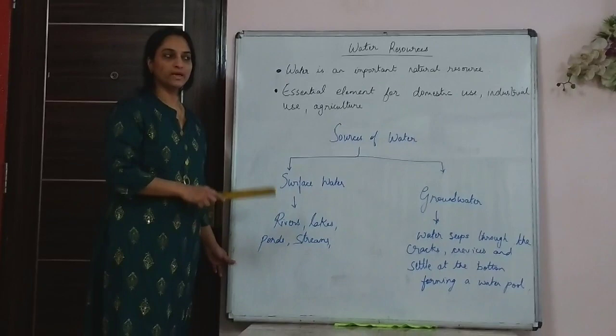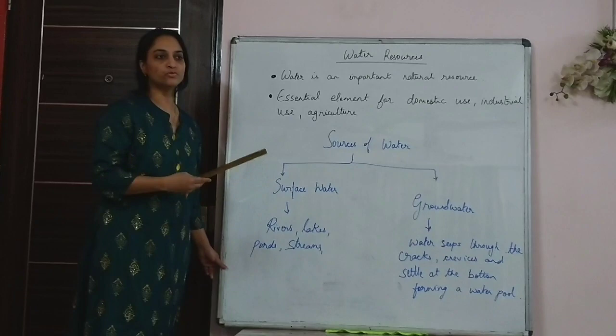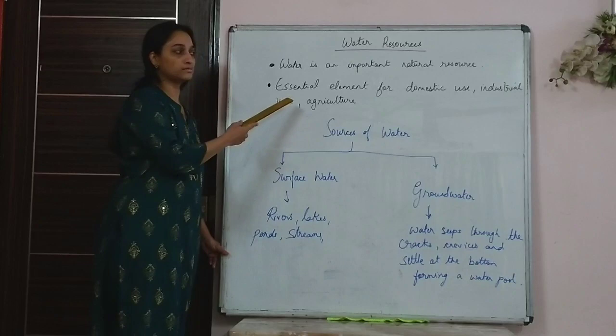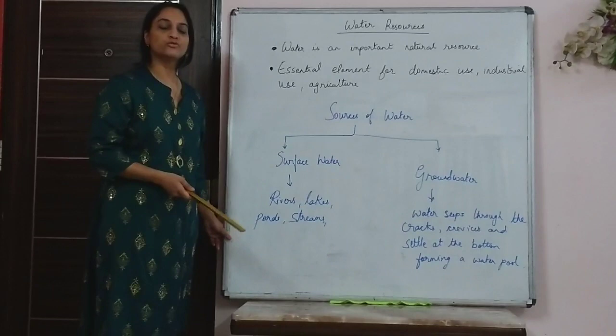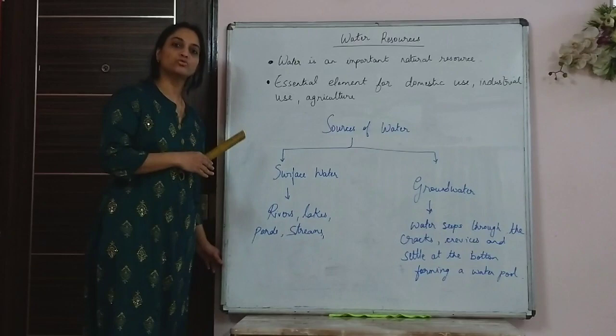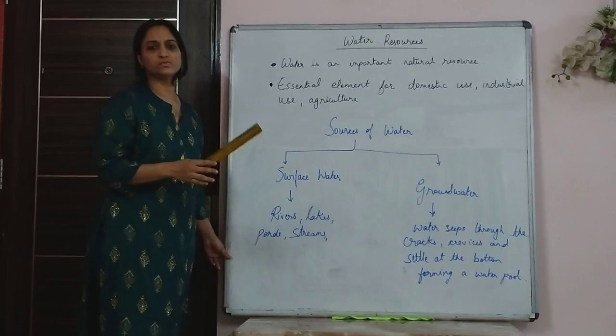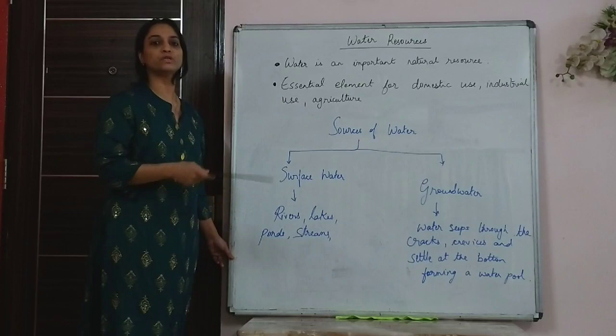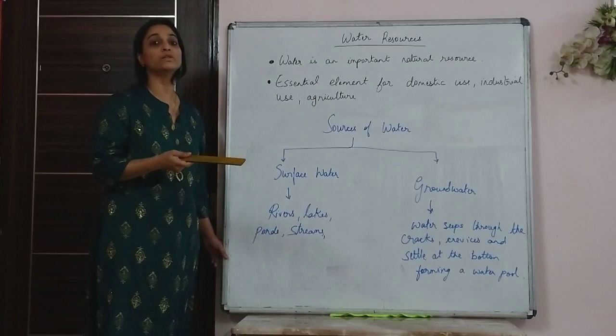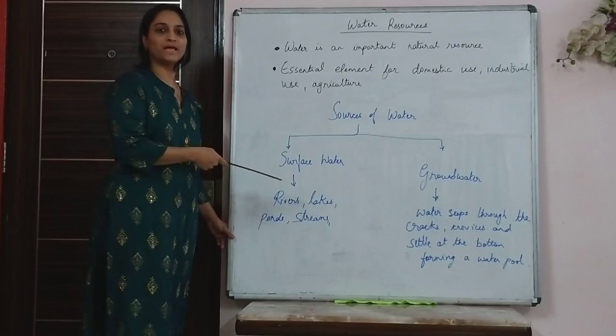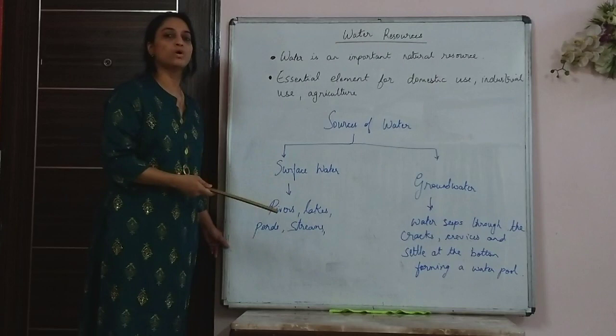The most important input for agriculture, other than improved seeds, good quality seeds, fertilizers, and manure, is water. Water needs to be adequately sufficient for proper growth of crops. Agriculture is an activity carried out throughout the year, but India receives rainfall mainly during the rainy season from June to September. The other months remain dry, except for the Coromandel Coast on the East Coast, which receives rainfall during winter from tropical depressions.